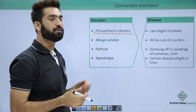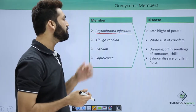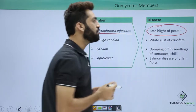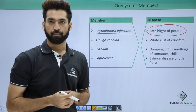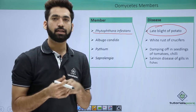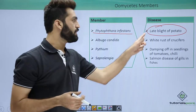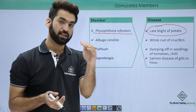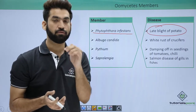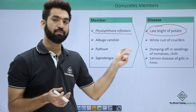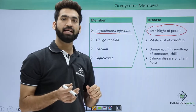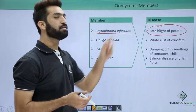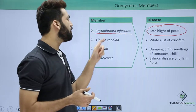One important member of this class is Phytophthora infestans, which causes a very important disease called late blight of potato. In potato there are two fungal diseases: late blight and early blight. Early blight is caused by a deuteromycetes member, so don't confuse between late blight and early blight — early blight is deuteromycetes, and late blight is caused by the oomycetes member Phytophthora infestans.